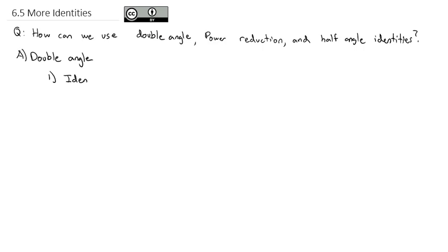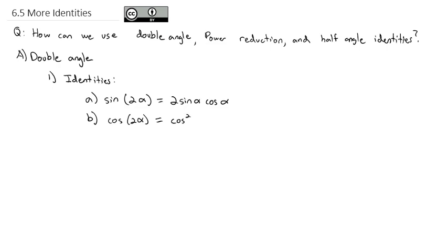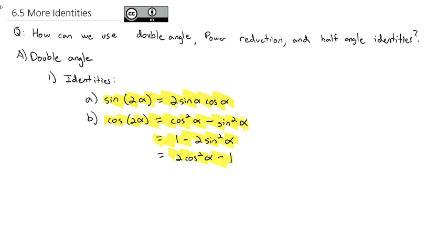The double angle identities we found were that the sine of some doubled angle 2α is equal to 2 sine α cosine α. The cosine of 2α is equal to cosine squared α minus sine squared α. Using the Pythagorean identities, that can also be rewritten as 1 minus 2 sine squared α, or as 2 cosine squared α minus 1. So this is really two identities, one of which can be written three different ways.